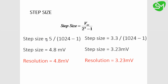At the 0th step, the voltage is 0 volts. At the first step it is 4.8 millivolts. At the second step it is 9.6 millivolts. This pattern continues, and when the ADC reaches 1023 steps, the voltage read is 5 volts.